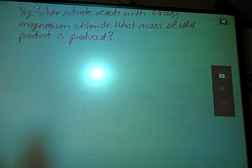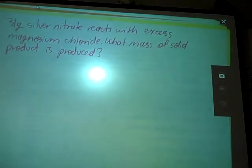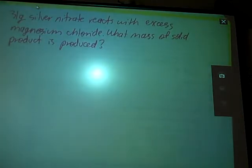All right, so as promised, here is the first of our problems. 31 grams of silver nitrate reacts with excess magnesium chloride. What mass of solid product is produced?